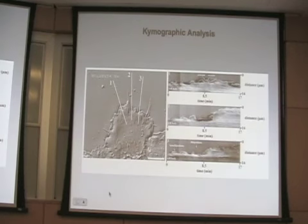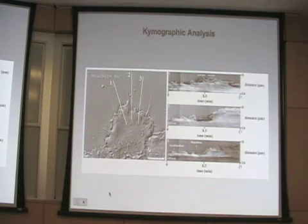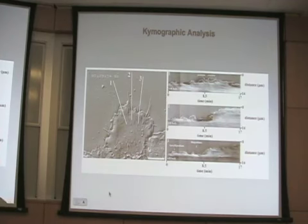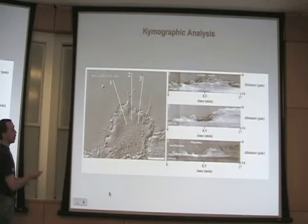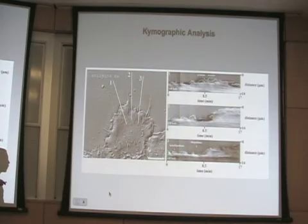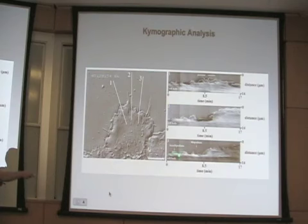In addition, we performed kymographic analysis to get further information about leading edge activities. We have a DIC image of a keratinocyte, we placed lines in the regions of interest, and created kymographs or time-distance plots, which allow us to follow the movement of the leading edge. You can clearly distinguish between protrusion and retraction activity, and in this case we have a lamellipodium that is protruding and retracting.